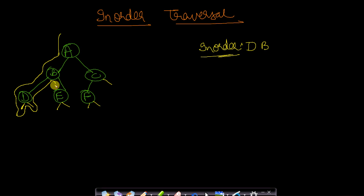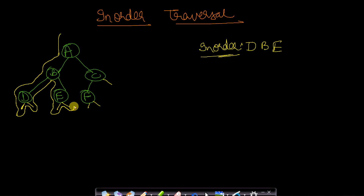After B we reach E for the first time — we do nothing. We go to the left subtree of E but there is none, so we come back to E. Since we are reaching E for the second time, we print E. Then we go to the right subtree of E — there is none — so we again reach E, then B, then A for the second time. Now we print A.